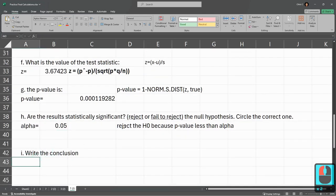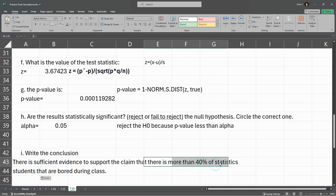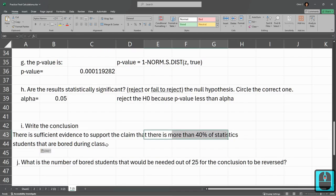So now we get to write the conclusion. We rejected H0. Basically means we're accepting the alternative. But we're not allowed to actually write that. So the way we write that is like this. There is sufficient evidence to support the claim that more than 40% of statistics students are bored during class.